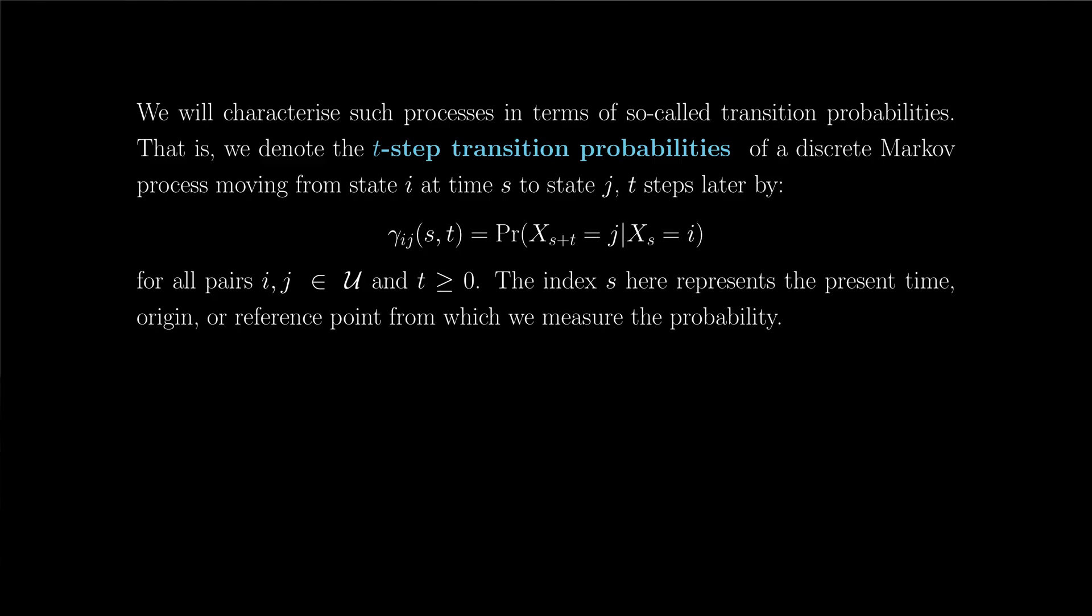Right, so in order to formulate a probability model for a Markov chain, so that is a statistical model which describes how the process evolves over time probabilistically, then we make use of the so-called transition probabilities. So that is, we denote the t-step transition probabilities of a discrete process moving from state i at time s to state j, t steps later, simply by gamma sub ij arguments st. And we set that equal to the probability that the process is in state j at time s plus t, given that it was in state i at time s. And that should hold for all pairs i and j in cal u, and for all time steps greater than or equal to not.